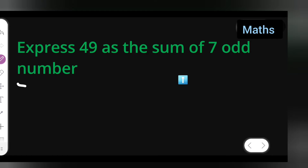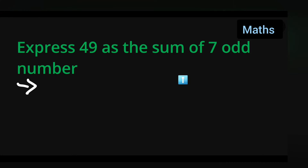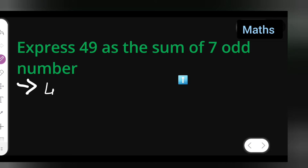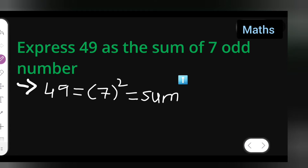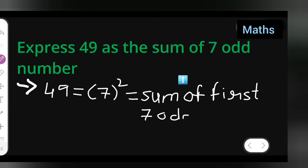First step: write down 49. Now, 7 squared is 49, right? So 49 is equal to the sum of the first 7 odd numbers.